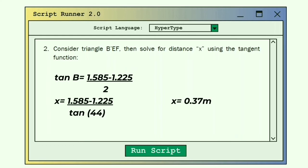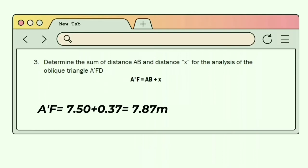Second, consider triangle BEF, then solve for the distance X using the tangent function. The formula is: tan β equals (H₁ minus H₂) over X, and X equals 1.585 minus 1.225 all over tan 44, which equals 0.37.